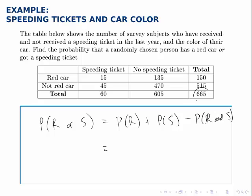Since we're selecting from a group of 665 total people, that will be the denominator for each piece. The probability they had a red car, well the total number of people in this group who had a red car was 150. 15 of them got a speeding ticket, 135 didn't, but a total of 150 people in this group had a red car.